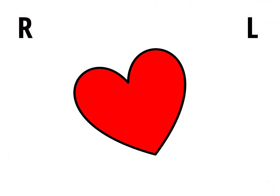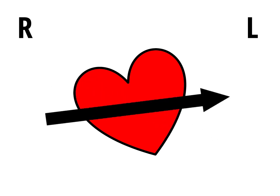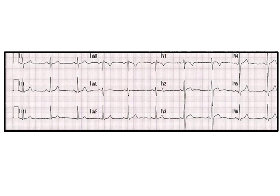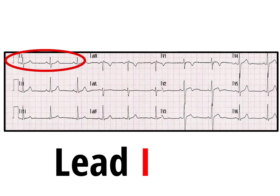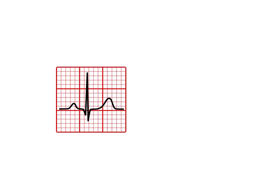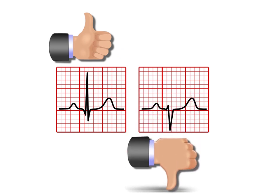The cardiac axis is the overall direction of ventricular depolarisation. Sometimes the axis is normal, too far to the left, or too far to the right. You can work it out really simply by finding leads 1 and 2 and deciding if these leads are positive or negative. Use your thumbs — put a thumb up for a positive lead or down for a negative.